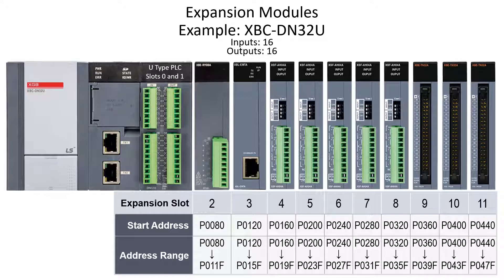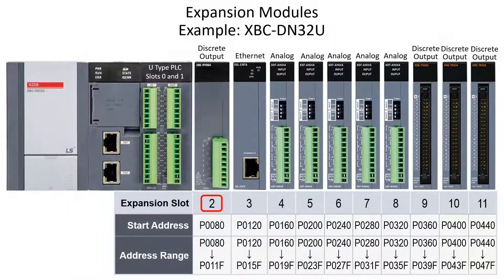In this example we are using a 16-input, 16-output model configured with 10 expansion modules. A total of 10 expansion modules can be added to the U-type PLC. Slot 2 is the first expansion slot in the U-type configuration. Slot 1 is reserved for the internal functions within the U-type PLC.